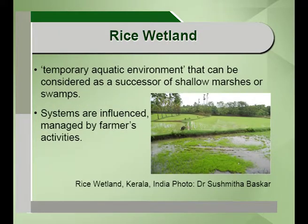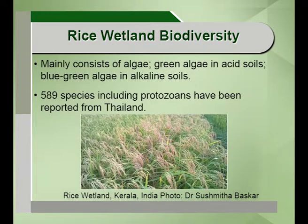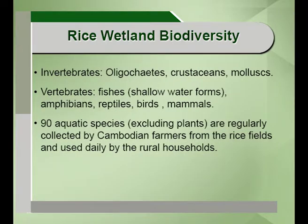Rice wetlands — as the name indicates, rice is grown in these ecosystems. They are systems influenced and managed by farmer activities, temporary aquatic environments considered successors of shallow marshes or swamps. They mainly consist of algae or blue-green algae, emit methane, and have blue-green algae in alkaline soils. More than 589 species including protozoans have been reported from rice wetlands in Thailand alone. Invertebrates include oligochaetes, crustaceans and mollusks. The vertebrates include different types of fishes, and in the south of India they practice integrated rice-fish farming and rice-duck farming practices.